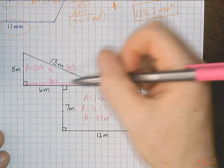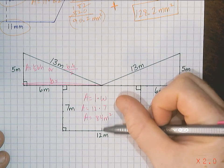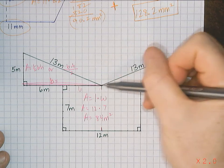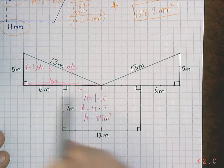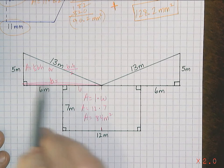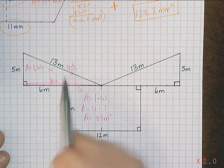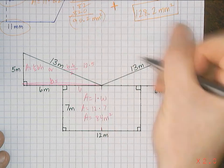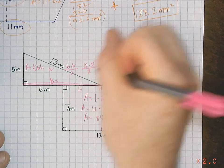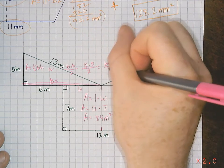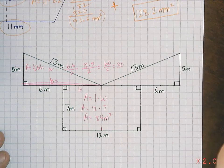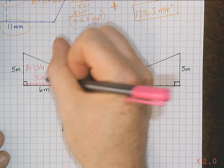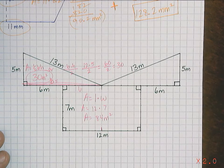It actually ends up being, if you take a look, remember this is 12 right here. Half of 12 is 6, so this is 6 and this is 6. That means the total bottom piece here is going to be 12. So it's actually 12 times the height, which is 5. So it's 12 times 5 divided by 2, which is 30 meters squared.